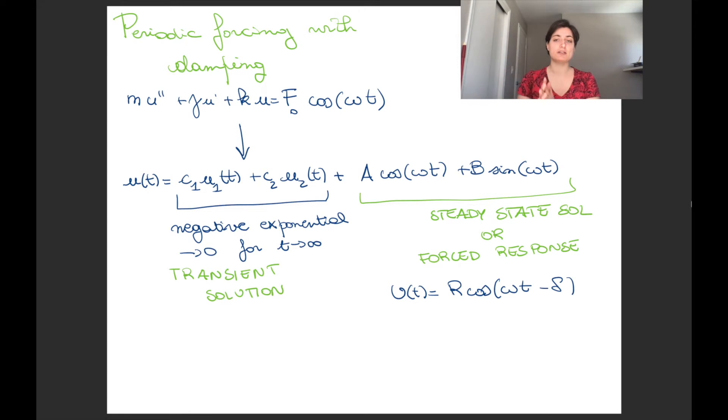When we're looking at the steady state solution, we can rewrite it in a new form. Instead of writing it as a sum of sine and cosine of the same frequency, we can write it as R times cosine of omega t minus delta. R is called the amplitude, omega is the frequency, and delta is the phase angle. It shifts your starting point.